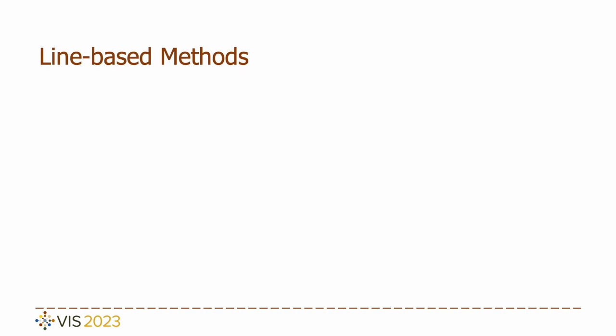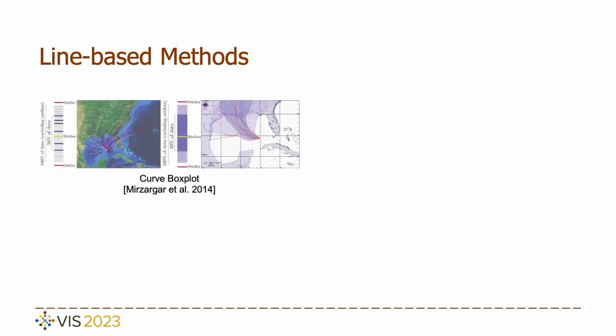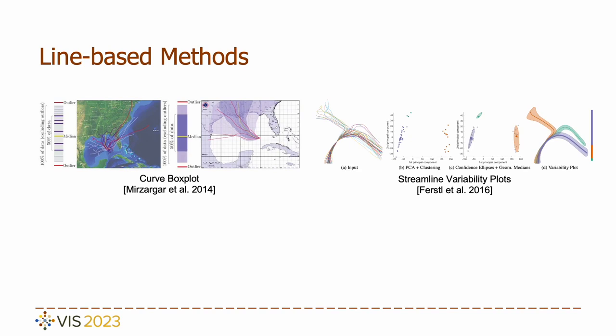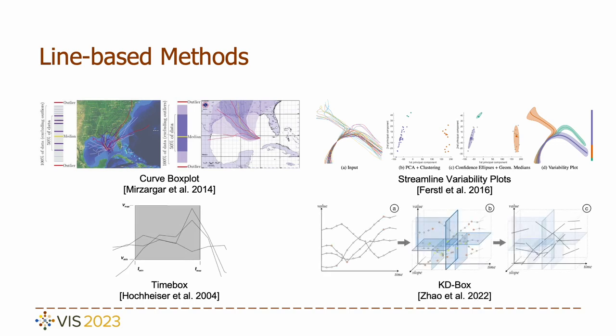In the line-based approach, Eastline serves as a fundamental unit for clustering, abstraction, and querying. Curlbox plots abstracts line bundles in a boxplot fashion. Streamline variability plots employ line-clustering methods and construct curlbox plots for each cluster. Timebox queries data that traverses the box, indicating a range of positions within a specific time frame. Recently, Zhao et al. introduced KdBox, utilizing a KdTree to accelerate the timebox queries.